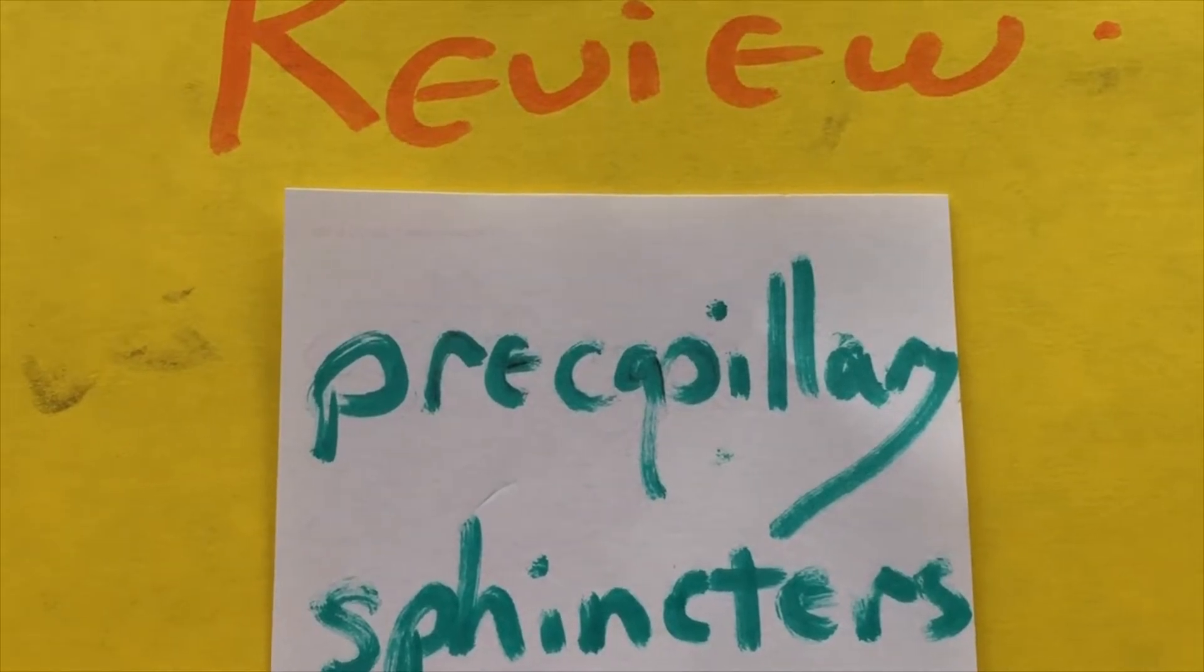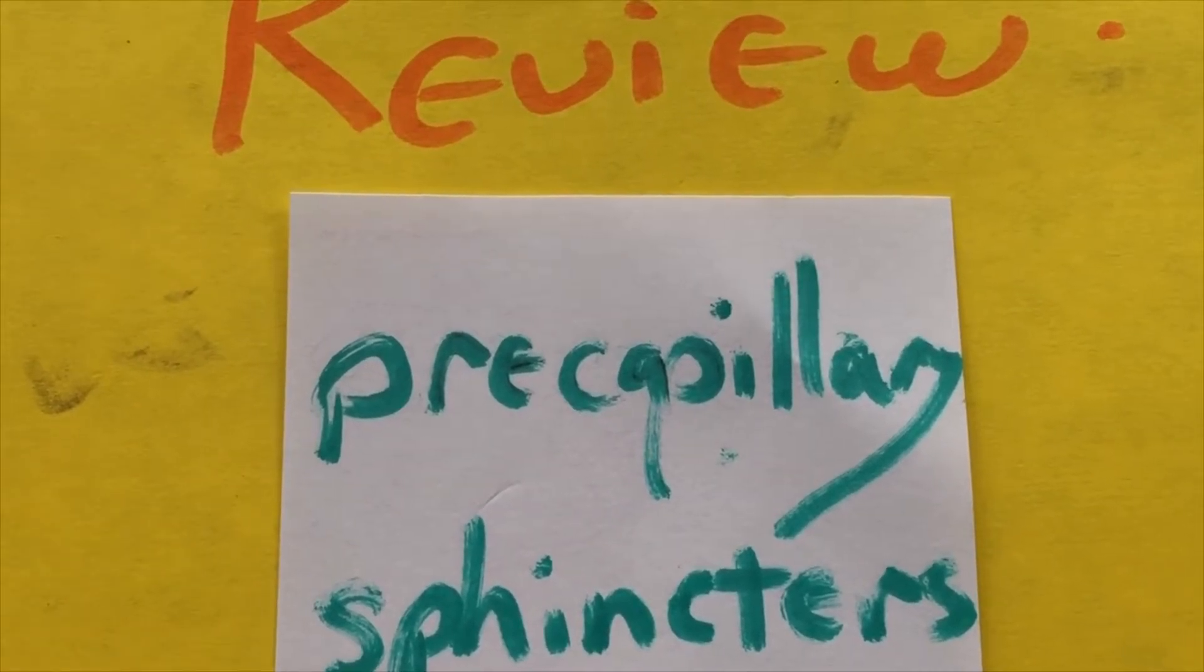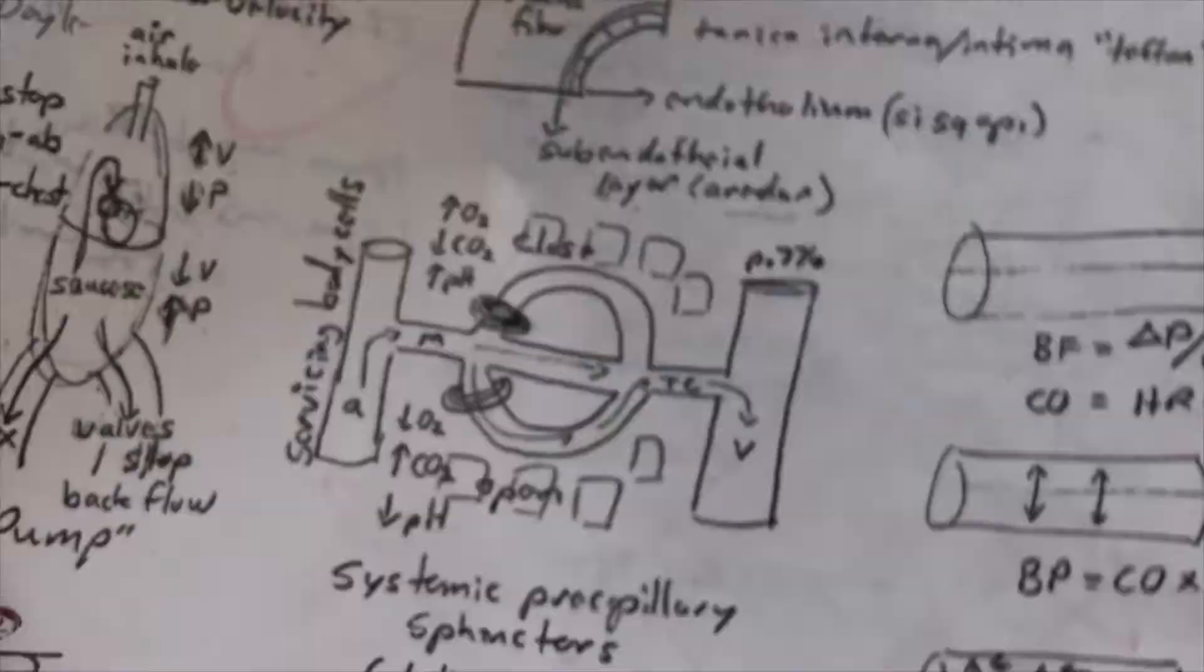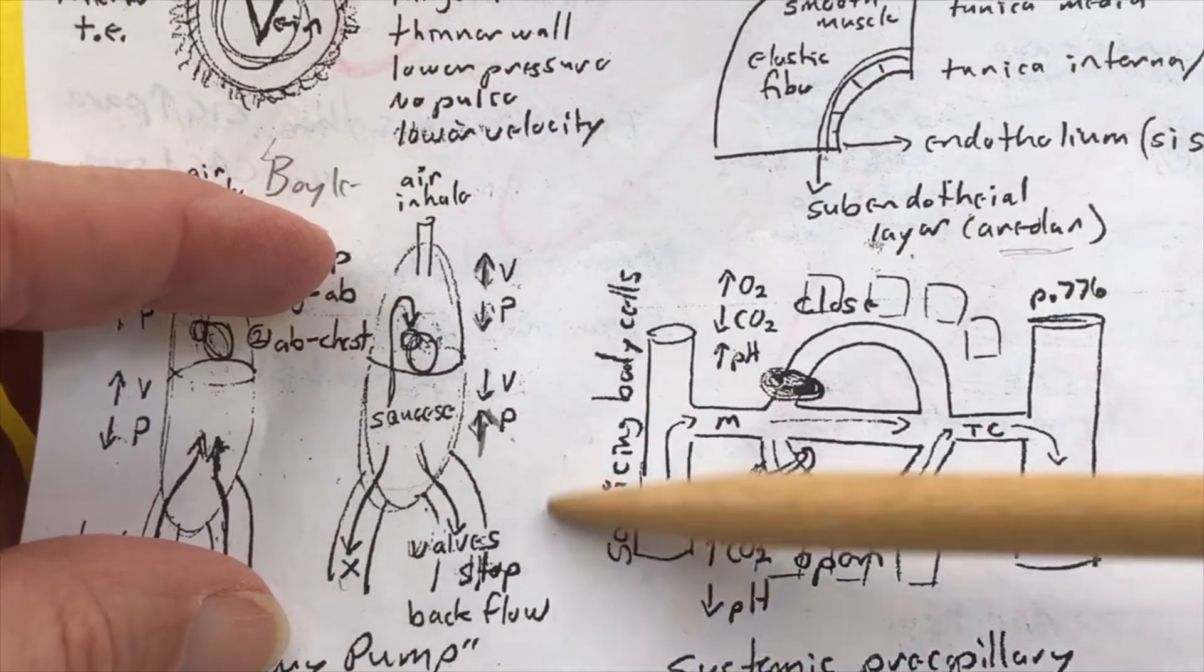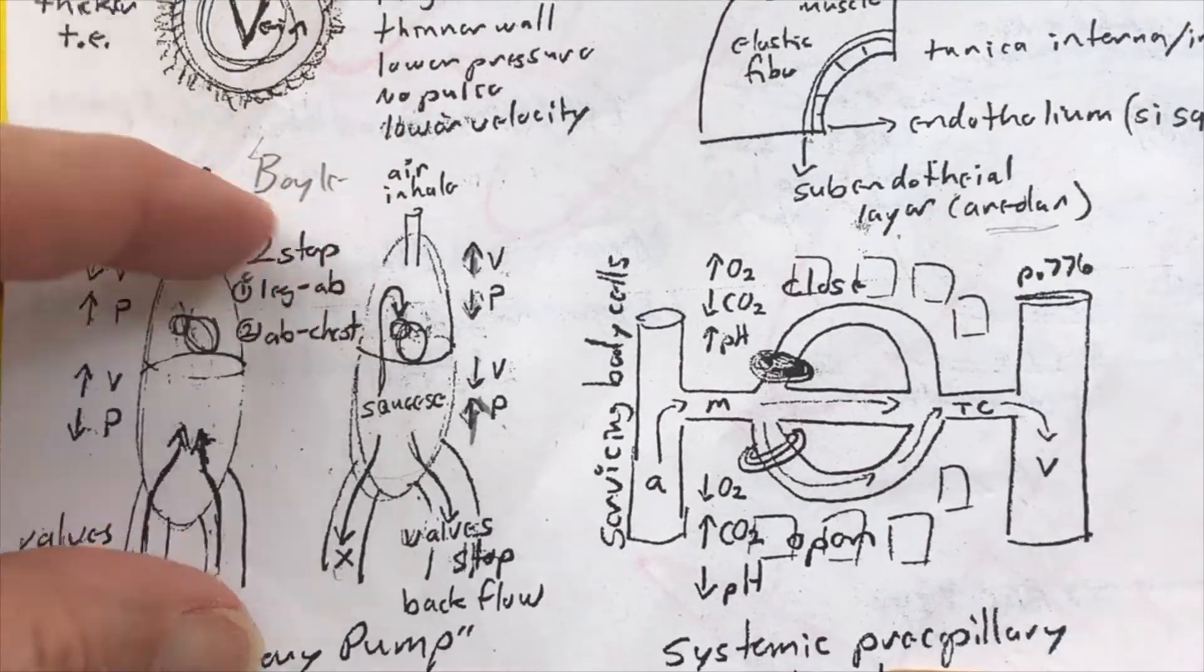Here we go again, a review of pre-capillary sphincters. Right off the graffiti page as the wind blows away. Here we go. Looking at this strange structure right here.